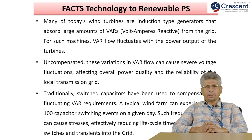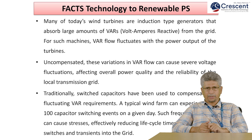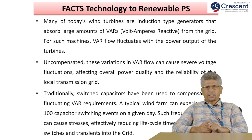FACTS technology for renewable power systems: FACTS technology can also be employed in renewable power systems. Many of today's wind turbines are induction-type generators that absorb large amounts of VARs from the grid. For such machines, VAR flow fluctuates with the power output of the turbines. Uncompensated, these variations in VAR flow can cause severe voltage fluctuations affecting the overall power quality and reliability of the local transmission grid. Traditionally, switching capacitors have been used to compensate for fluctuating VAR requirements. A typical wind farm can experience 50 to 500 capacitor switching events on a given day. Such frequent switching can cause stresses, reducing the life cycle of capacitor switches and injecting transients into the grid.